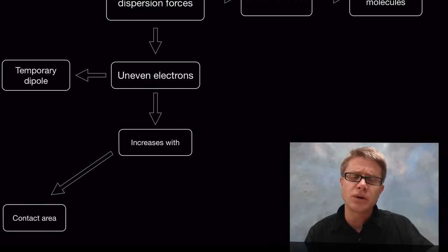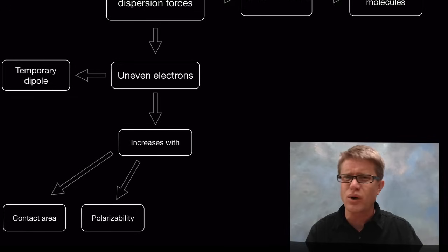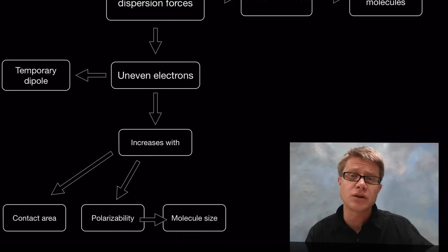These are going to increase as we increase the contact area between the molecules. Also as we increase their polarizability, which is going to be the squashiness of a molecule. Generally the more electrons you have the higher this is going to be.